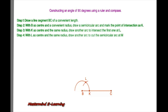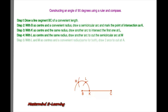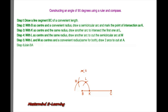With L as center and the same radius, draw a third arc to cut the semicircular arc at M. With L and M as centers and a convenient radius, the same for both, draw two arcs and intersect them at A.